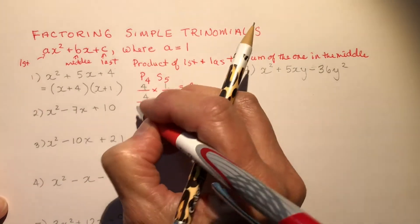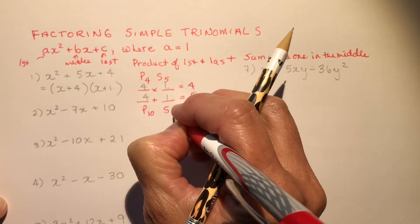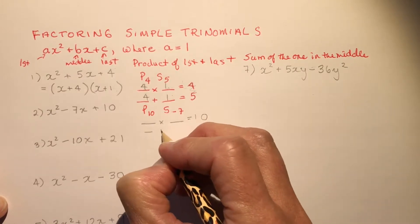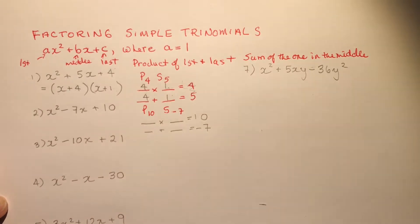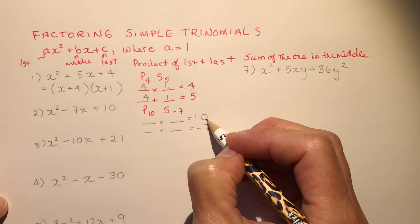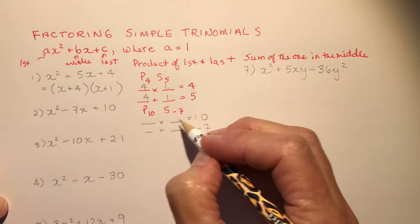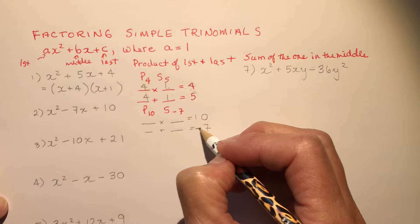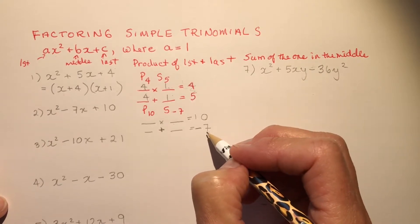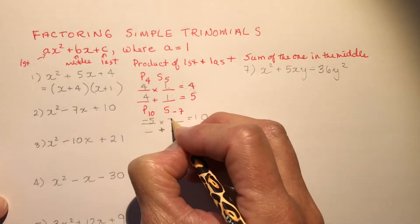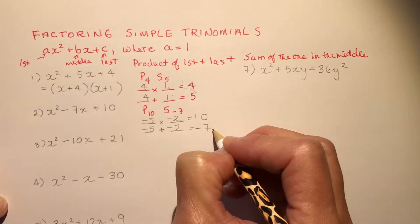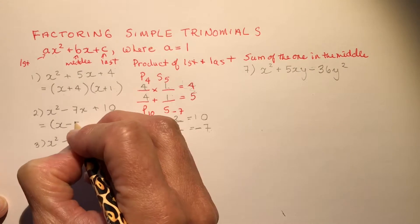We have a negative sum, so I want two numbers that multiply to give me 10 and add up to negative 7. If their product is positive, they must both be the same sign. Since they have to add to a negative number, they must both be negative. So I'm looking for two negative numbers that multiply to 10 and add to 7: that's −5 and −2. Minus 5 times minus 2 is 10, and minus 5 plus minus 2 is minus 7. So: (x − 5)(x − 2). Done.